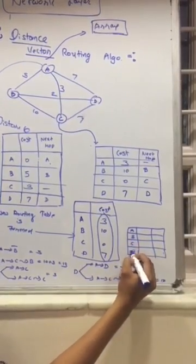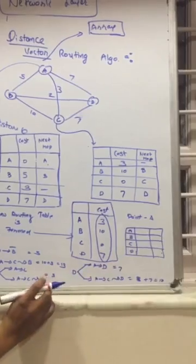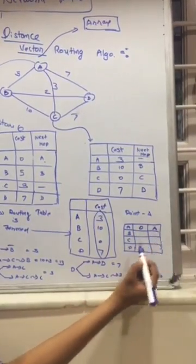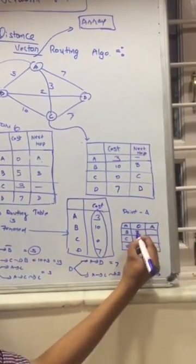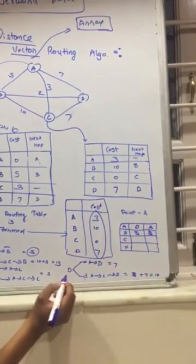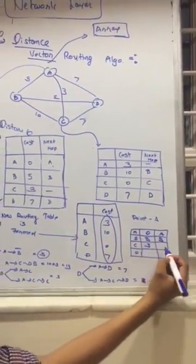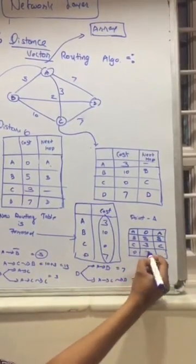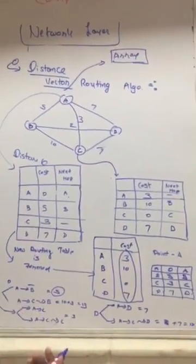So the final routing table at node A is: A-to-A = 0 (next hop: A), A-to-B = 5 (next hop: B), A-to-C = 3 (next hop: C), A-to-D = 7 (next hop: D). In this scenario, the routing table values are not changed from the direct link costs.